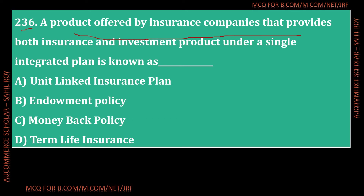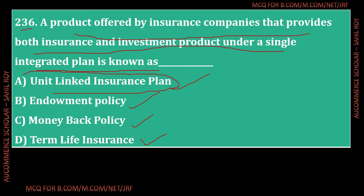Question number 236: A product offered by insurance companies that provides both insurance and investment under a single integrated plan is known as? Options: Option A - Unit Linked Insurance Plan, Option B - Endowment Policy, Option C - Money Back Policy, Option D - Term Life Policy. The correct answer is Option A - Unit Linked Insurance Plan (ULIP), which provides both insurance and investment under a single integrated plan.